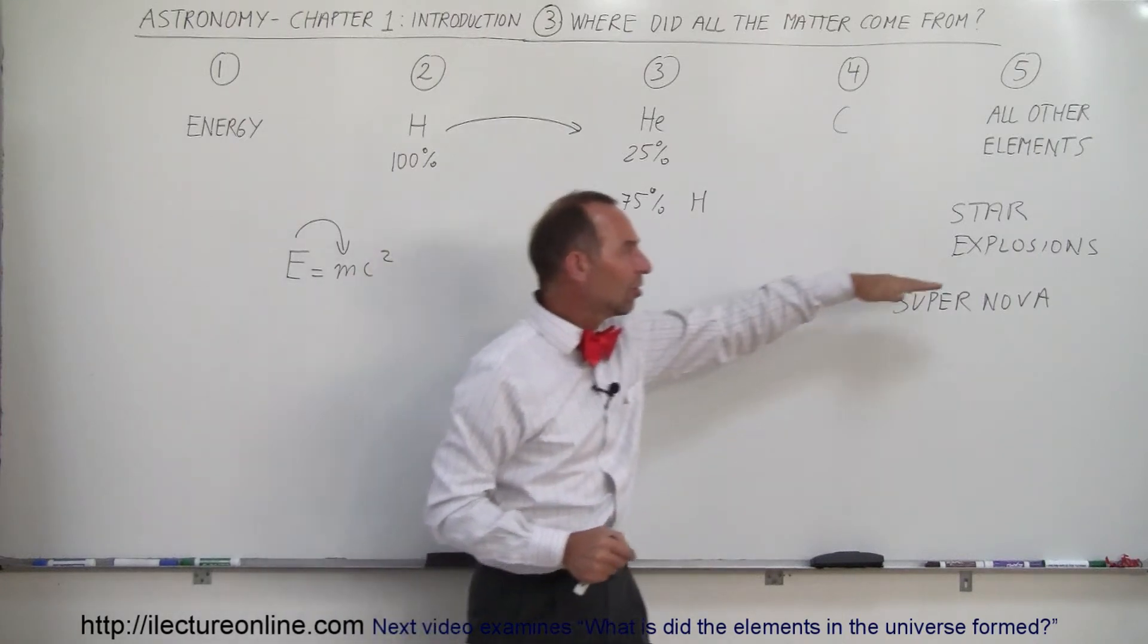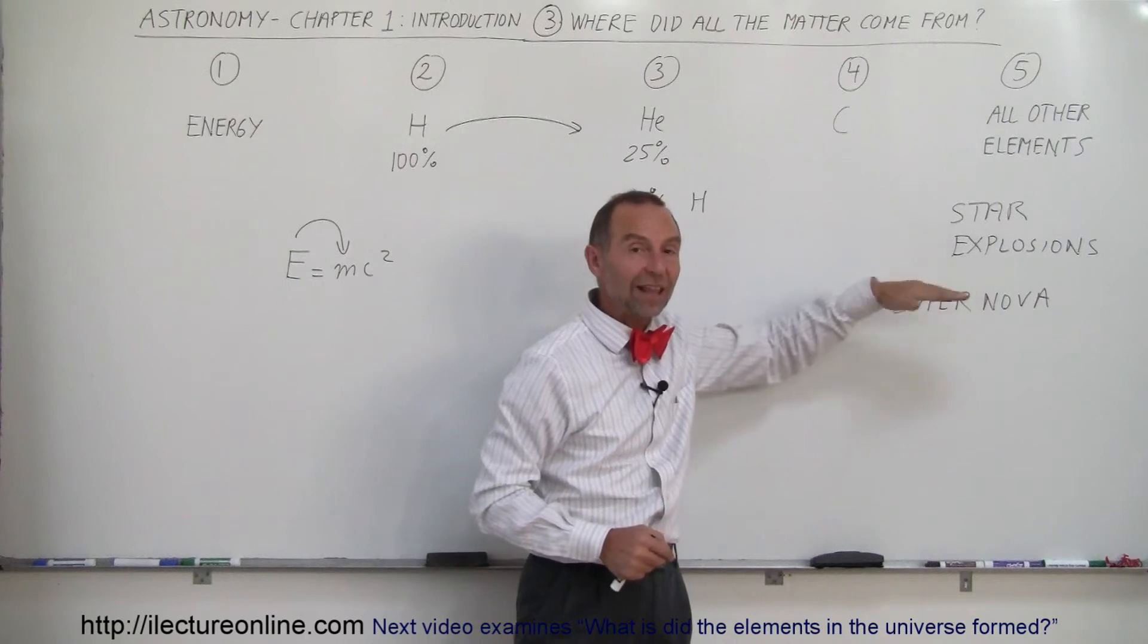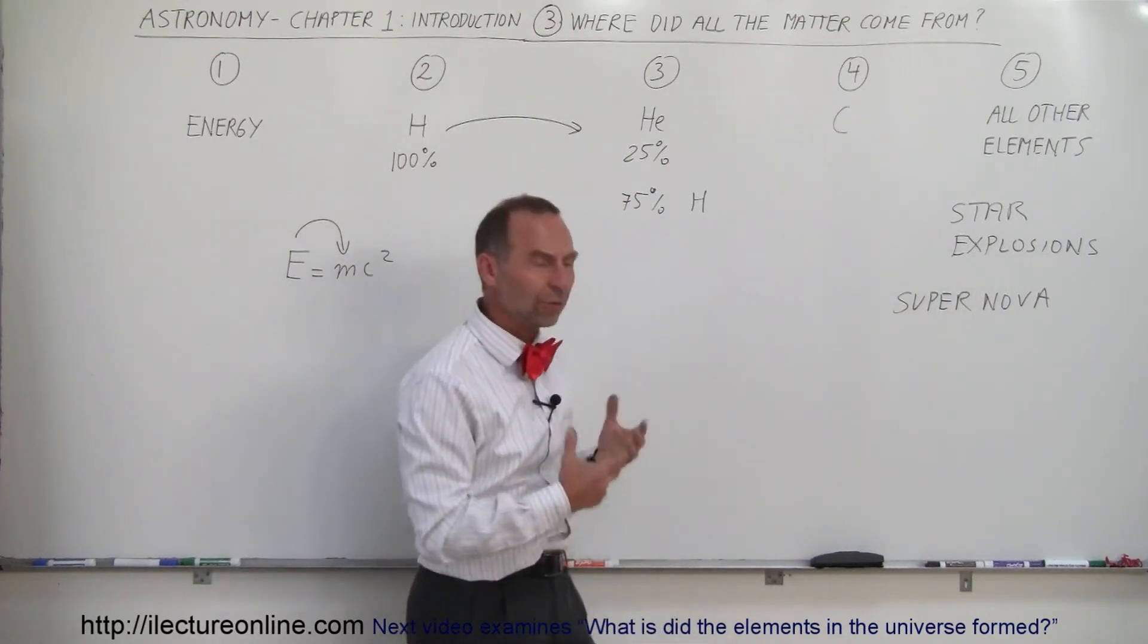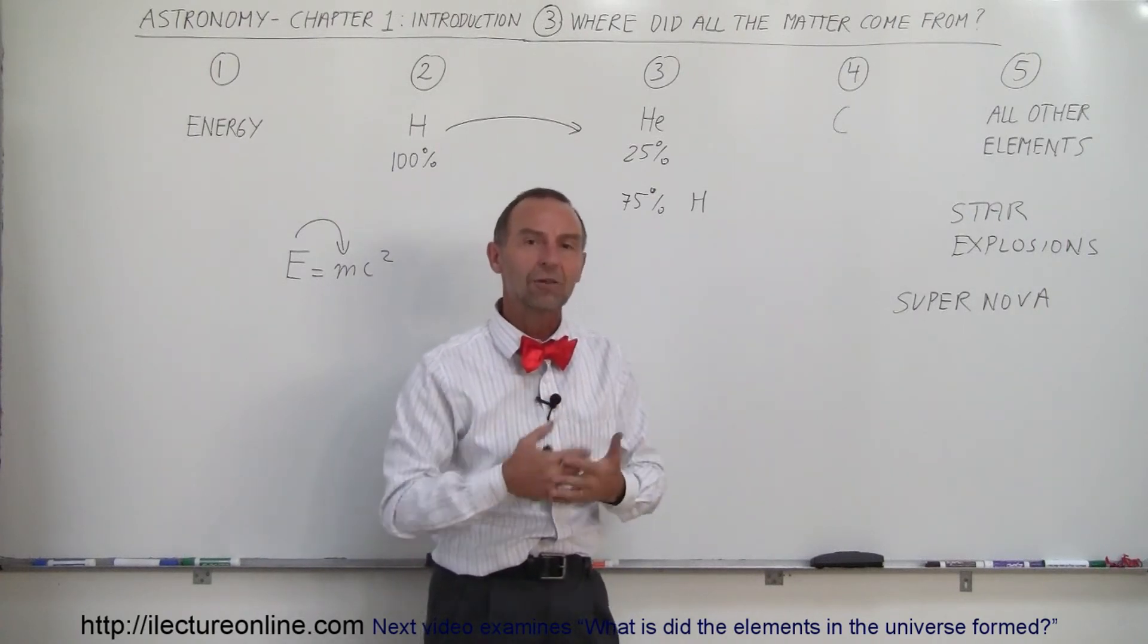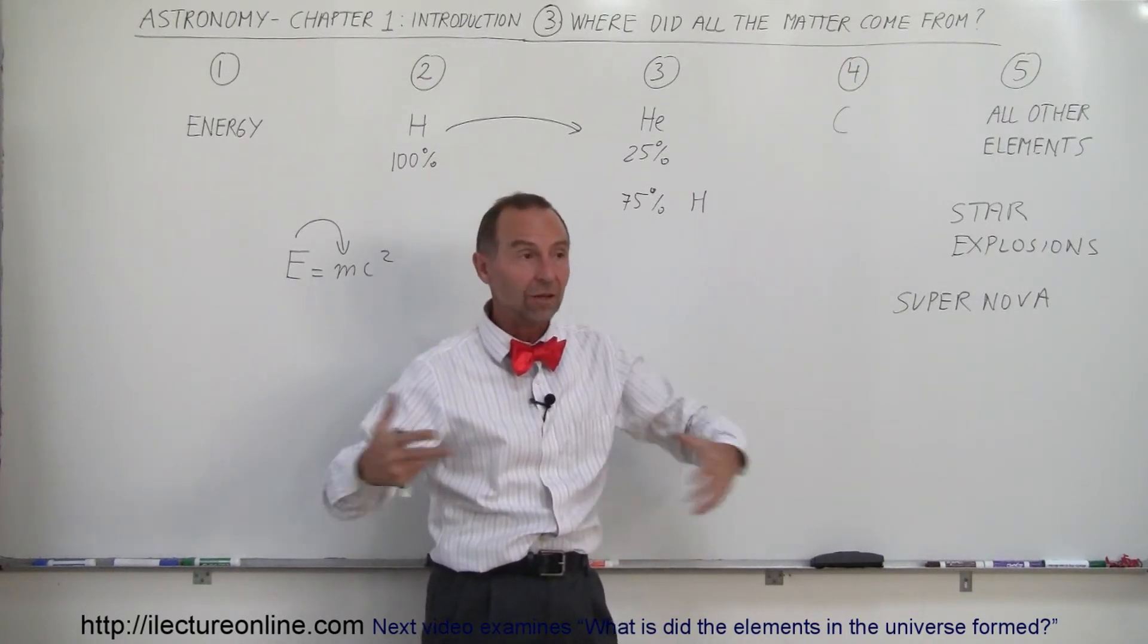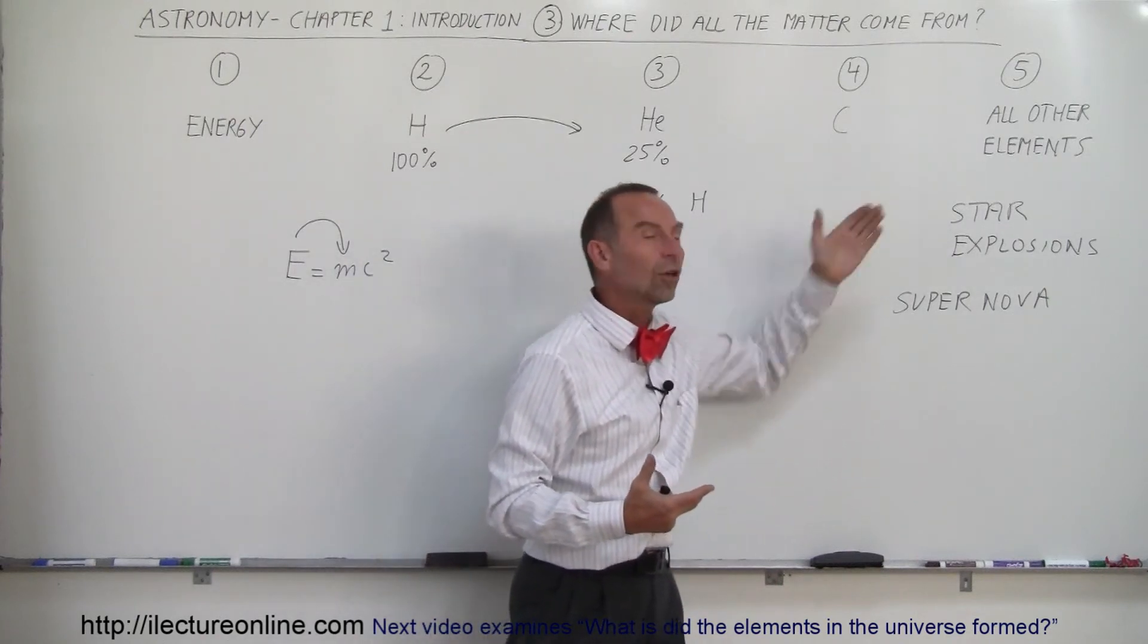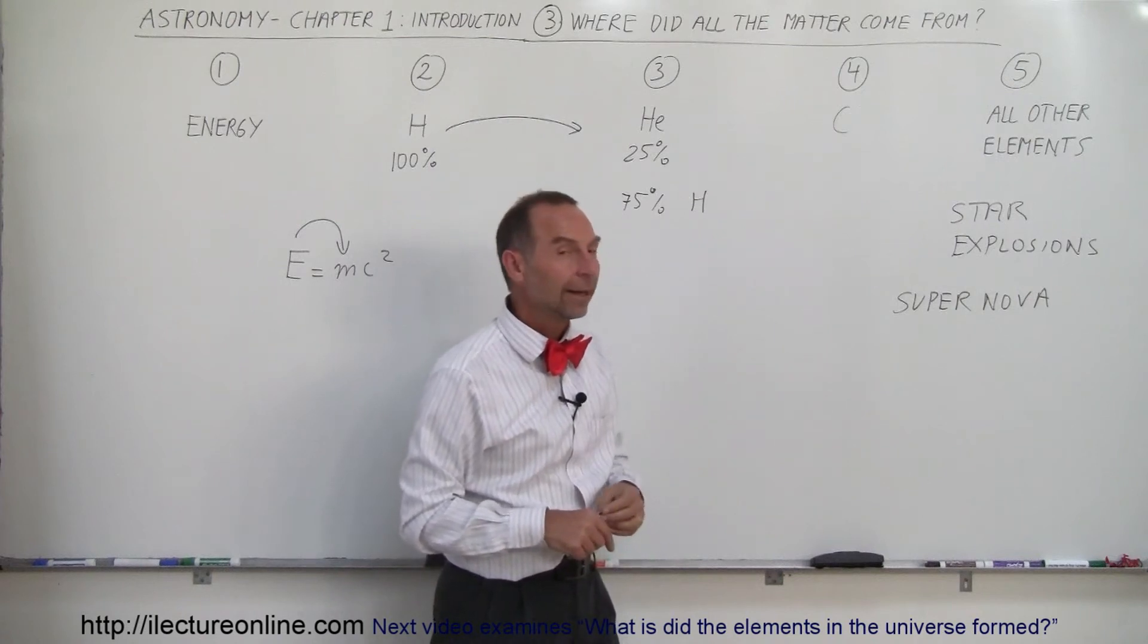So if these giant stars had never existed and these giant explosions had never occurred, we would have never existed. The Earth would have never existed. Planets like the Earth, terrestrial planets, could not possibly exist because the matter that makes up these things, the planets, the moons, and our bodies, and the animals around us, and the trees, and everything else, those elements come as a result of those supernova explosions, those enormous star explosions.